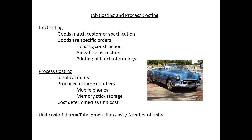and printers who produce batches for customers. Job costing should be distinguished from process costing, where all items produced are identical, and so costs can be determined as unit costs. Unit costs are obtained by dividing the total production cost by the number of units produced.